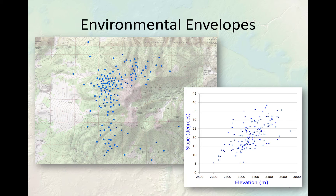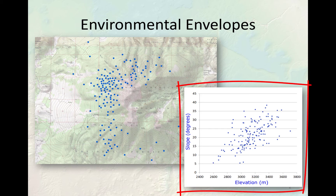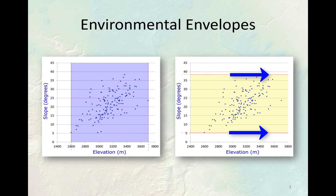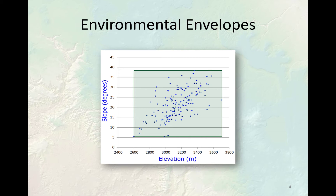Look at this example. We have all these animal locations distributed across the San Francisco Peaks. Suppose we're just looking at two habitat characteristics — slope and elevation. From all those locations, we can get the slope and elevation at each point and graph these out on a chart. An environmental envelope is just taking the range of values among each variable. In this case, we have elevations ranging from 2,600 to about 3,700 meters, and slope values ranging from just over 5 degrees up to just under 40 degrees. We take those ranges and plot them into a box on the graph.